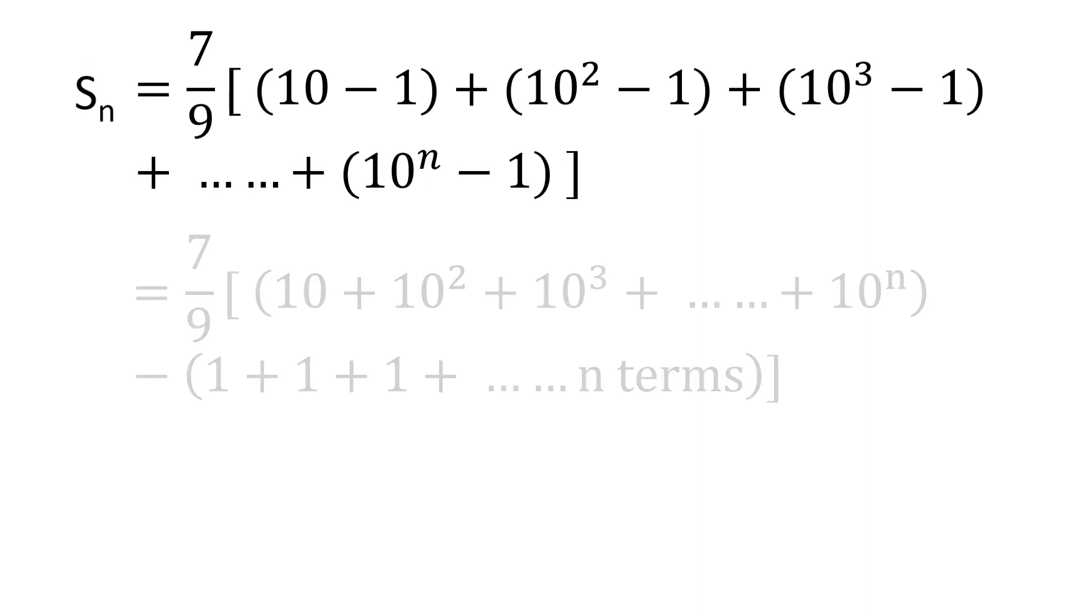Now to solve it further, we can separate the terms containing powers of 10 and the terms containing 1 only. So what we have now within the square brackets is a geometric series with common ratio as 10, and it contains n terms, and then we subtract another series in which we are adding 1, n times. Adding 1 n times will give us n.